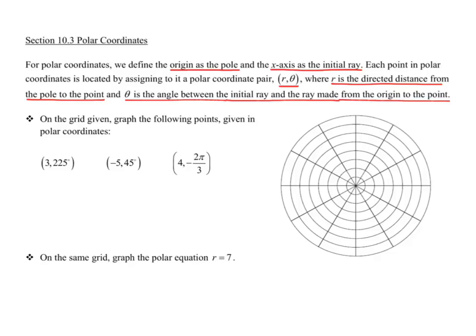Let's start by just graphing a few points in polar coordinates. On the grid given we want to graph the following points, given in polar coordinates, so the first number is your r — the length of the ray — and the second number is either given in degrees or radians and it's the angle made with the x-axis.